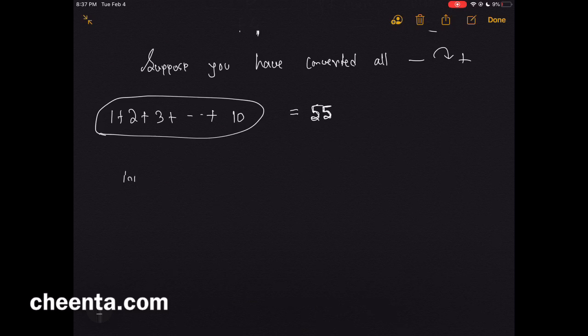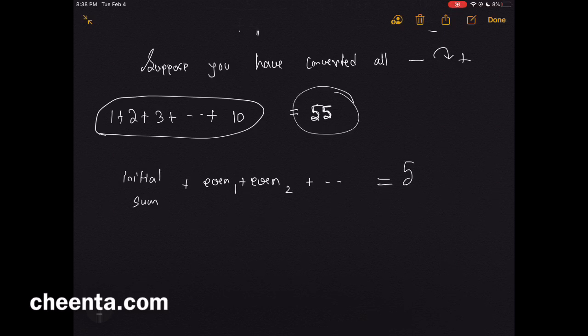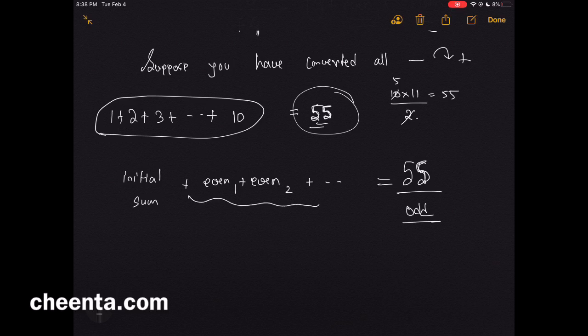That the initial sum, and you added a bunch of even numbers—even 1, even 2, and so on—and you got this final thing which is 55. There is a formula n into n plus 1 by 2, so you can use that to find this value. This is odd—55 is odd. You have added a bunch of even numbers, so their sum will also be even.